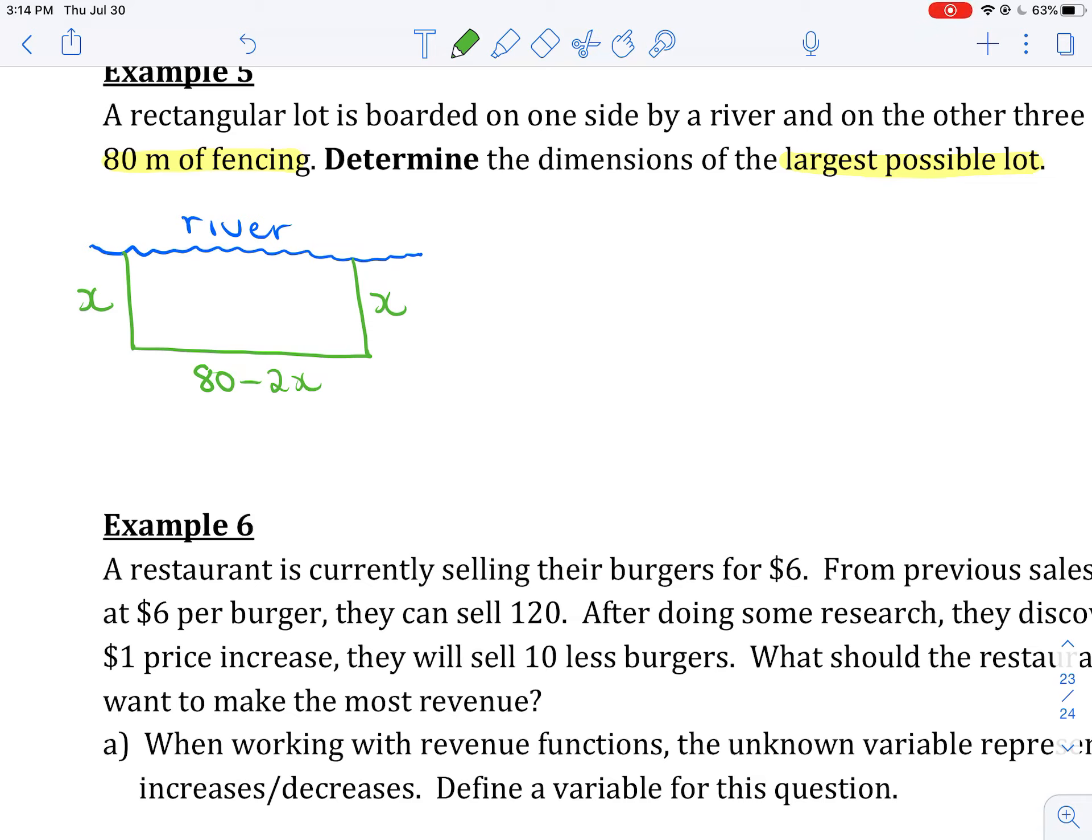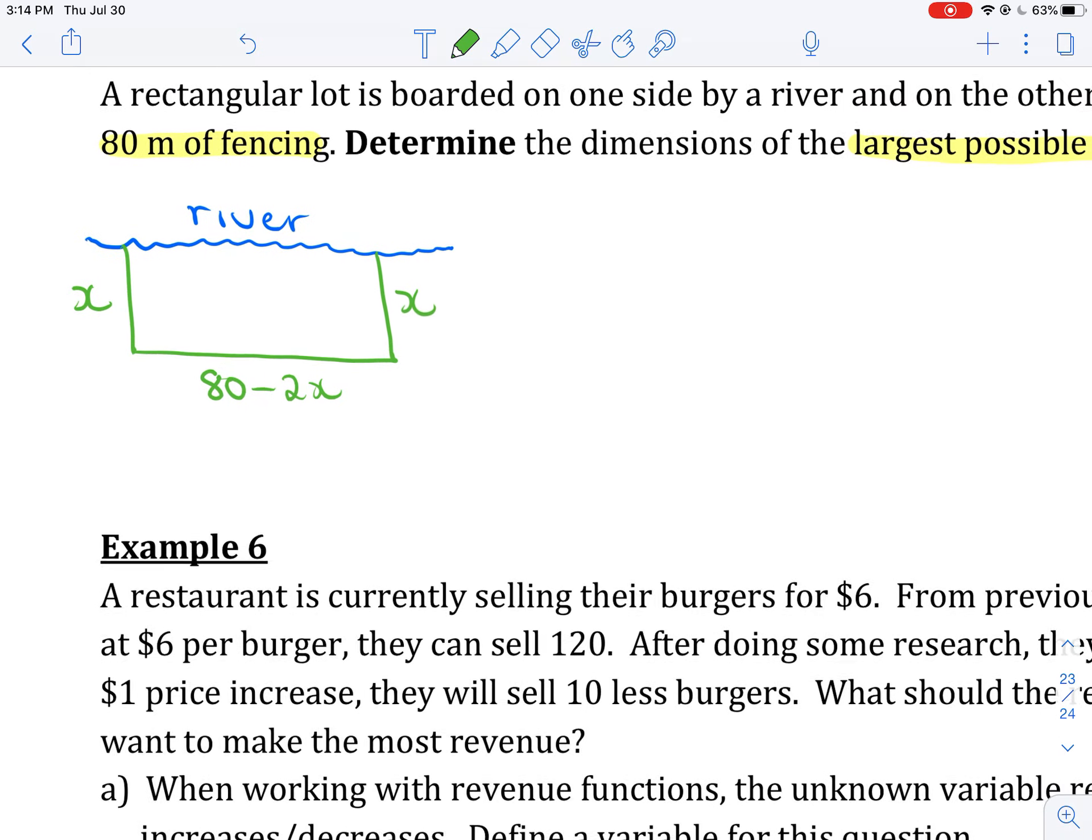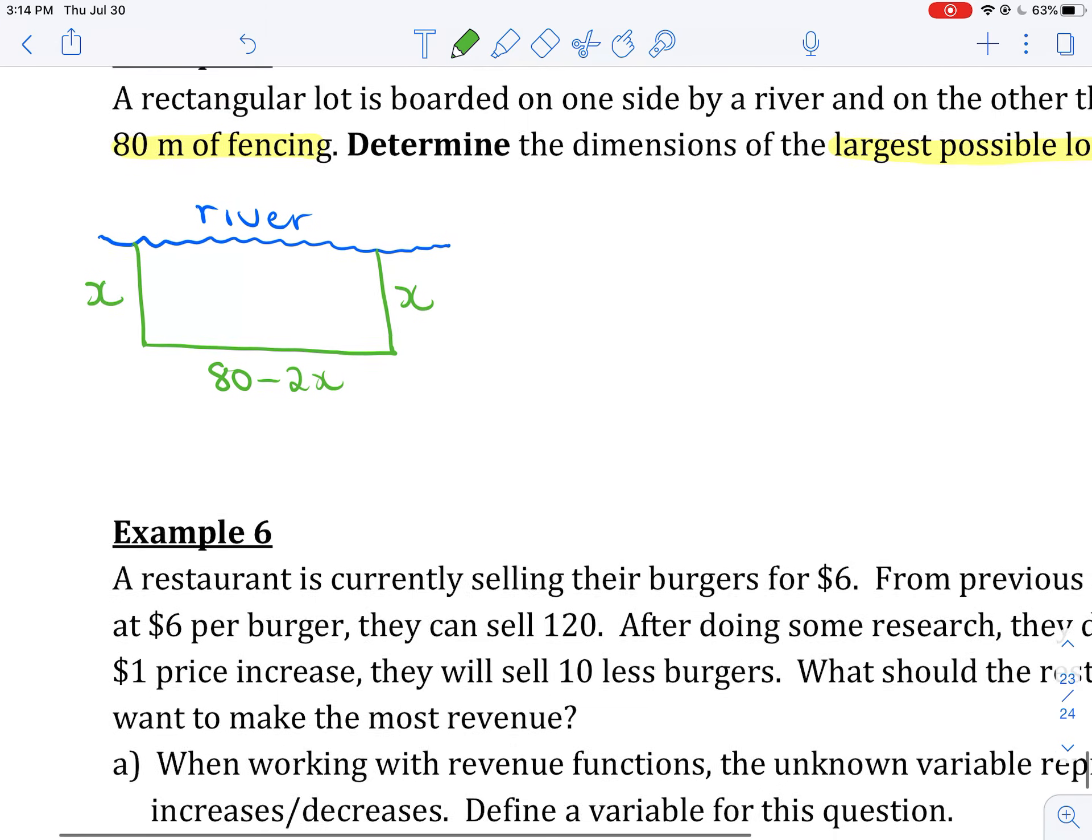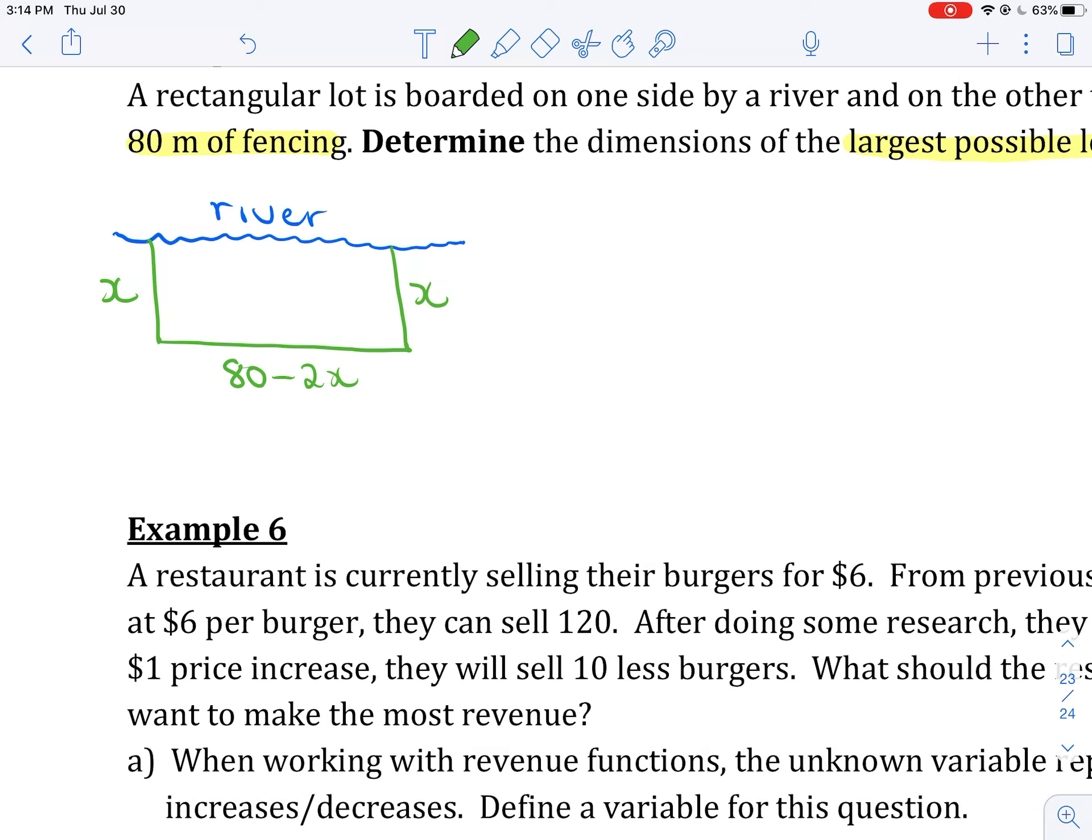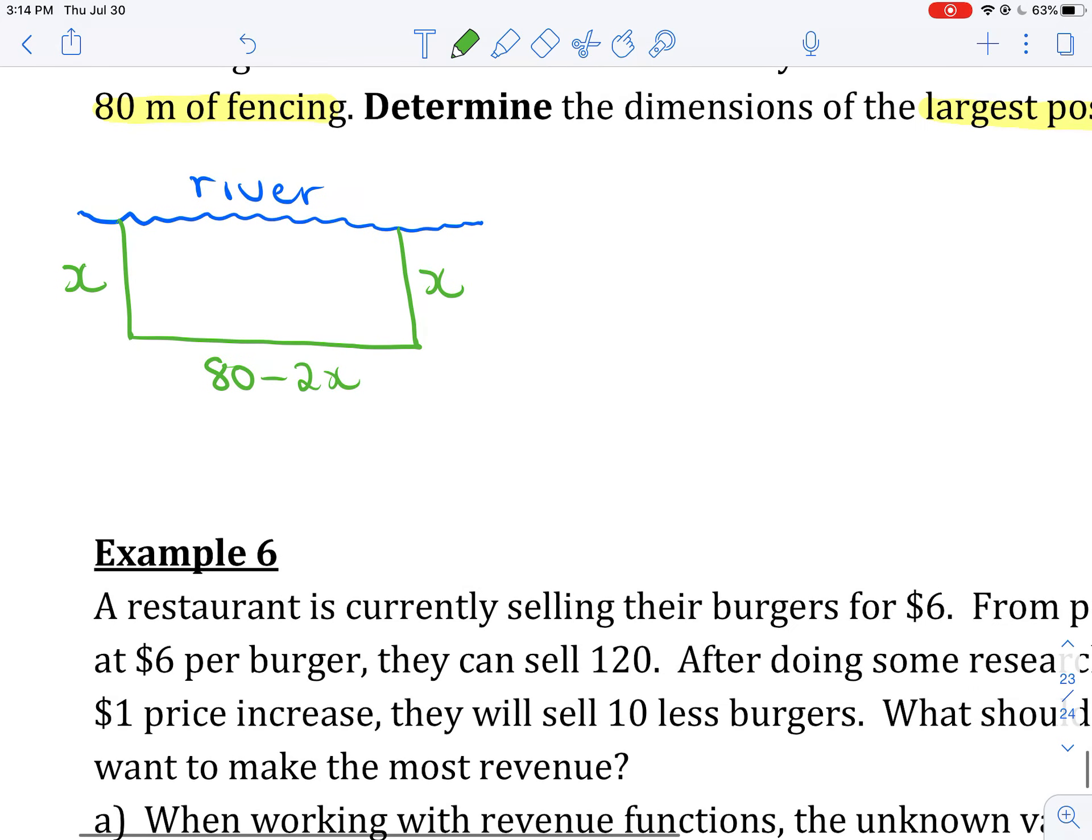So I used up x on one side, x on the other. That's a total of 2x. I started with 80. I used up 2x. So what's left is 80 minus 2x. So in terms of these variables, I'm just going to say here, let x be, I'll call that the height. And then let 80 minus 2x be the base. Or I could have called these length and width. It doesn't matter.